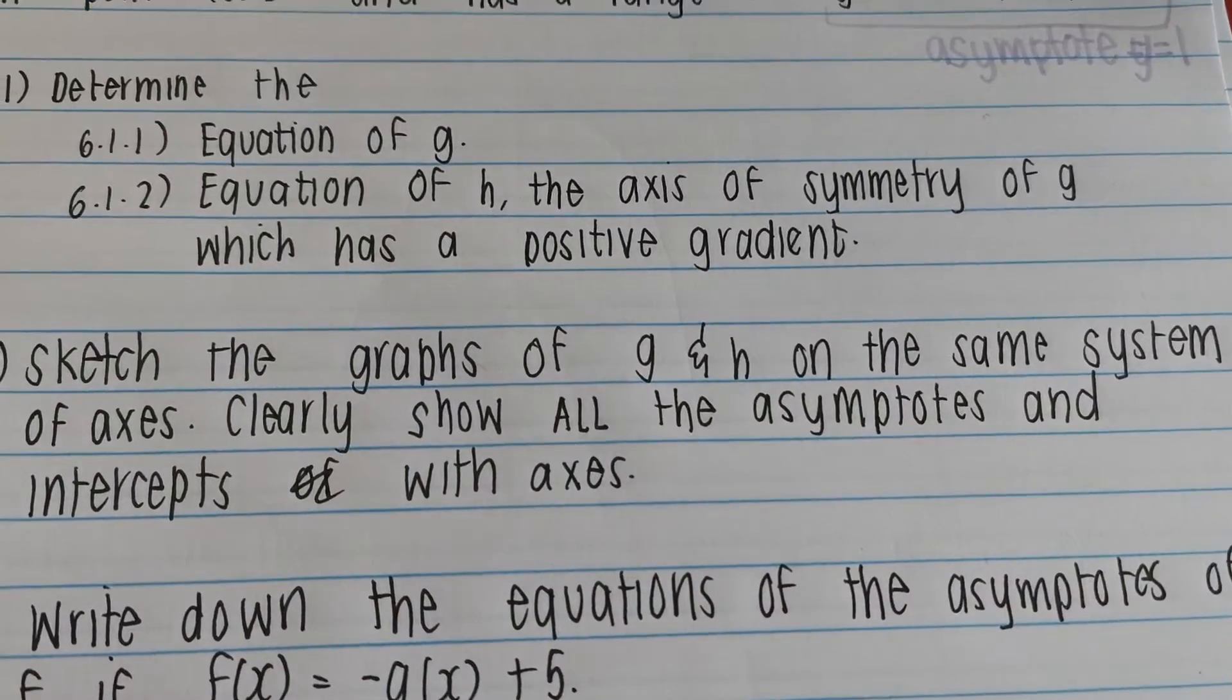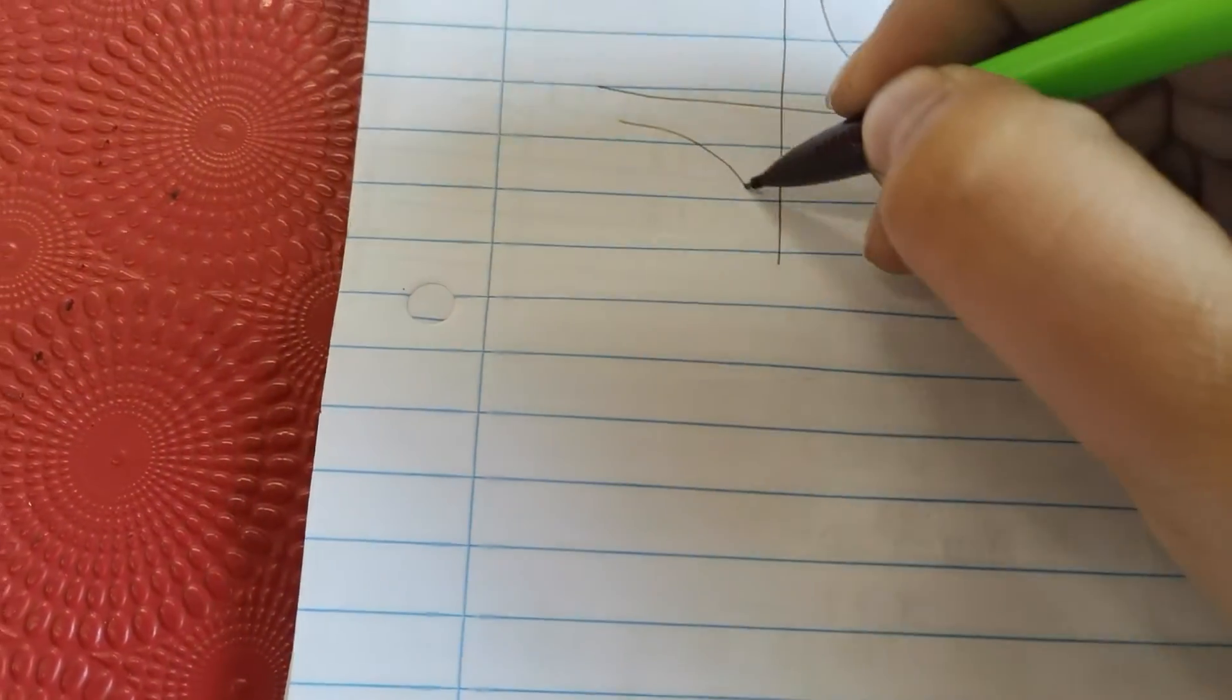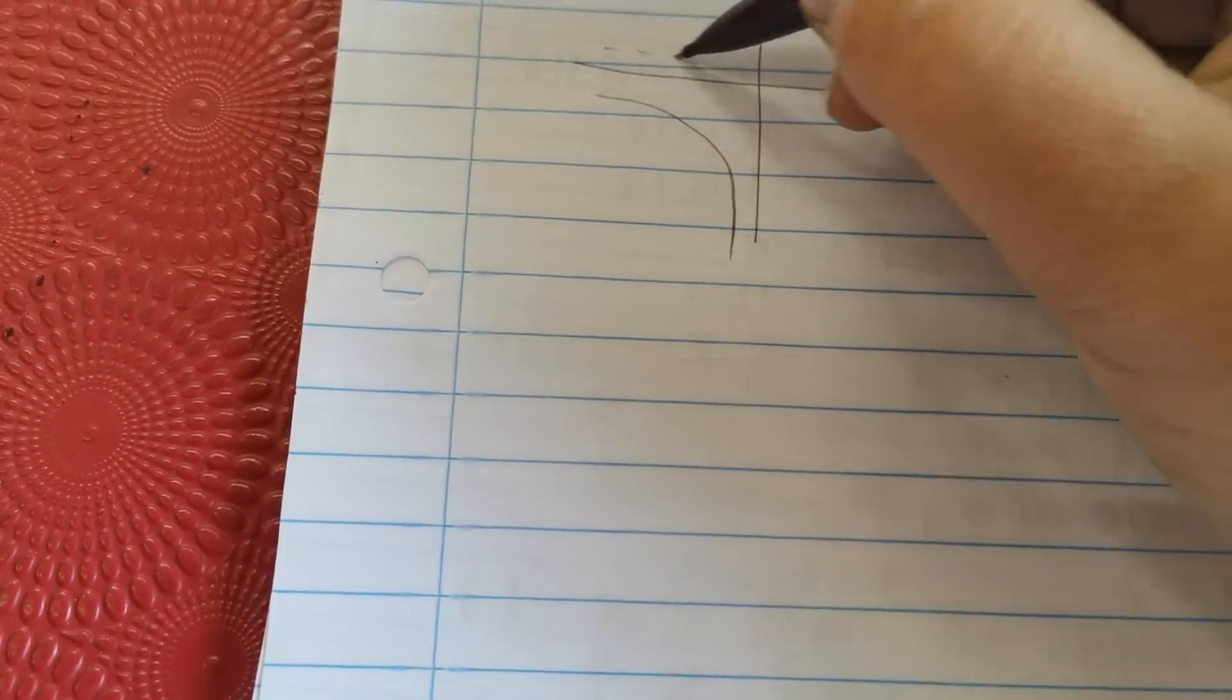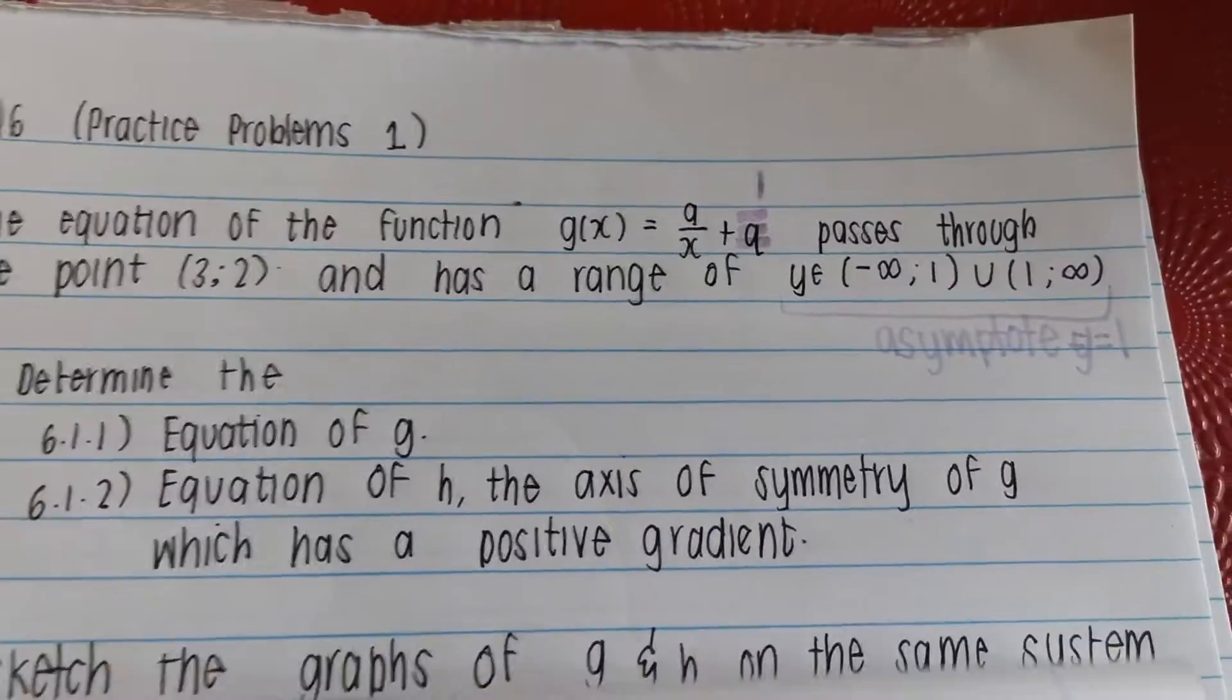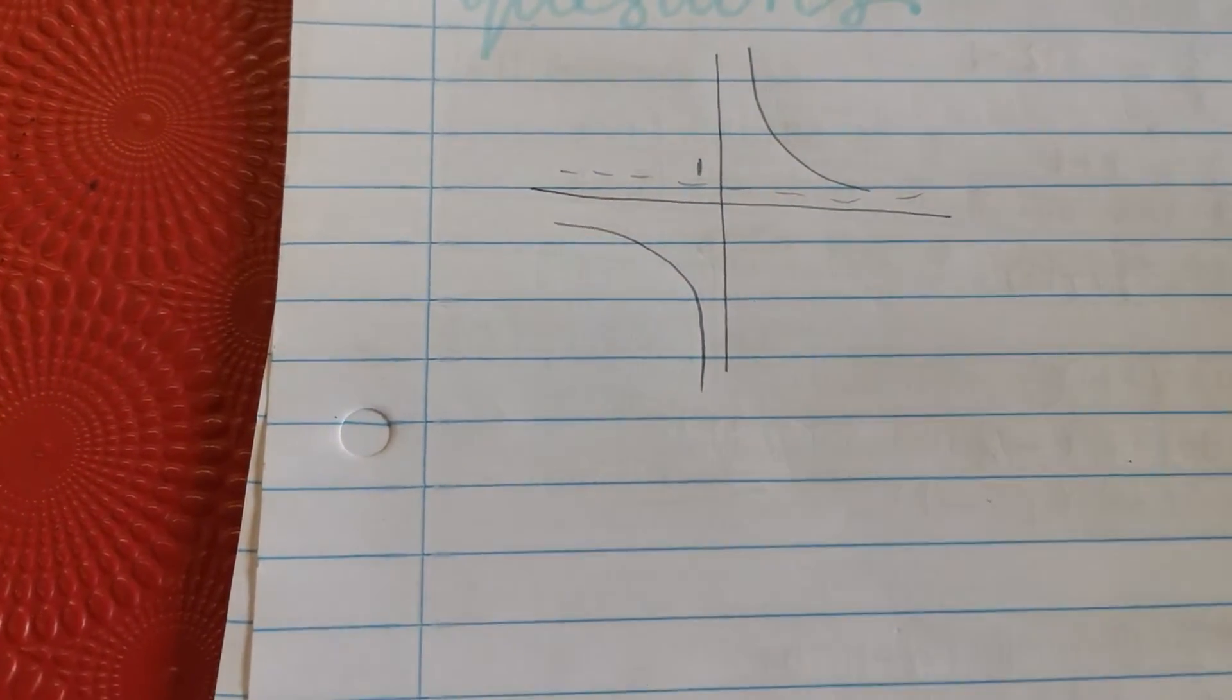Let's recap the theory that we know. Let me grab a paper to scribble on. What theory do we know? We know that if we have a hyperbola, let's say here's our hyperbola for example, and let's put the value at 1. Same like the one that we have over here. There are two axis of symmetry. The first axis of symmetry is this one here, which has a positive gradient.